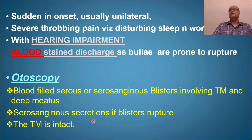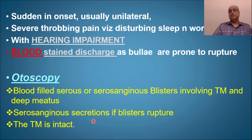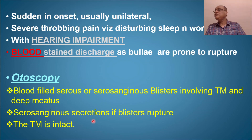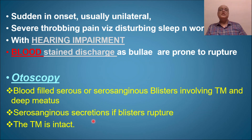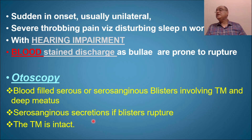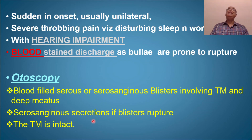When the bullae rupture — and they are prone to rupture — there will be blood-stained, serosanguinous discharge because the bullae contain blood-mixed fluid. On otoscopy, blood-filled or serosanguinous blisters/bullae are seen involving the tympanic membrane and deep meatus. If the blisters rupture, serosanguinous secretions will be present, but the tympanic membrane remains intact — there is no perforation.